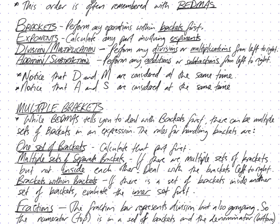B stands for brackets, and that's correct at the start — you have to perform any operations within brackets first. The E in BEDMAS stands for exponents, which are the little numbers to the top and right of a bigger base number. That's a power, also known as an order — it tells you how many times you multiply the base number by itself. So after you've done the brackets, you need to deal with any part involving exponents.